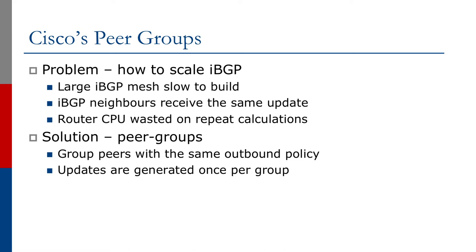Every IBGP neighbor receives the same update in a full mesh. The way IOS was implemented in the early years was the router would calculate the update to go to an IBGP neighbor, send the update, and then repeat the same thing for every single neighbor. Obviously this isn't very efficient. If you have 50 neighbors you have 50 updates to compute and then 50 updates to send. As computer programmers will know, you don't compute the same thing 50 times — you compute it once and then send the results out to the end devices that need those results.